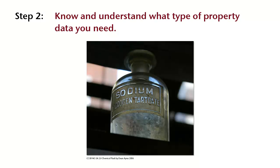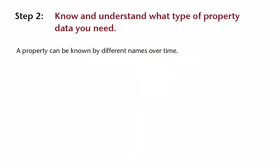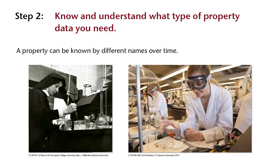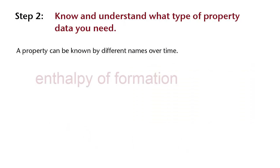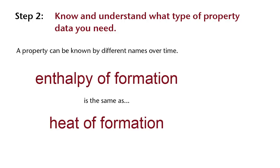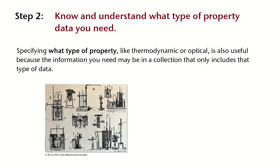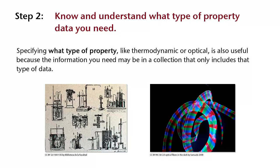Step 2: Know and understand what type of property data you need. After identifying other names for your substance, the second step is to know and understand what property you are trying to find. The name by which scientists call a property can change over time. As with substances, properties can be known by other synonyms or by symbols. For example, the enthalpy of formation may also be called the heat of formation, or it might be represented by the symbol delta H subscript F. Specifying what type of property — like thermodynamic or optical — is also useful because the information you need may be in a collection that only includes that type of data.